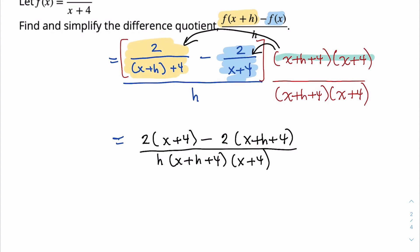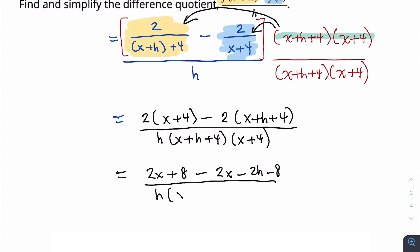So now, at this point, the numerator does need some help, because it's not completely expanded and it's not completely factored. So I'm going to distribute the 2 to the x and to the (x+4), and the minus 2 to the (x+h+4). So you have 2x plus 8 minus 2x minus 2h minus 8, all over h times (x+h+4), (x+4).